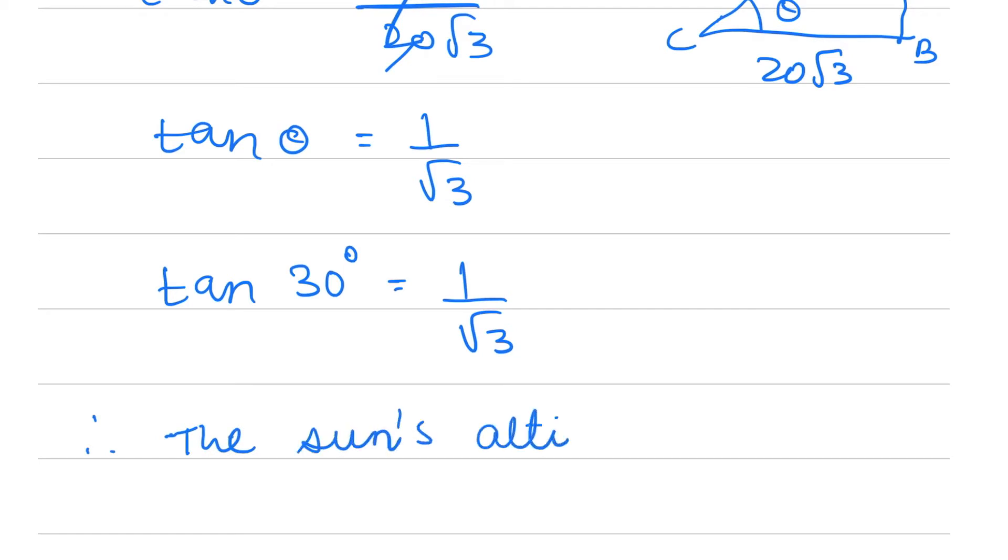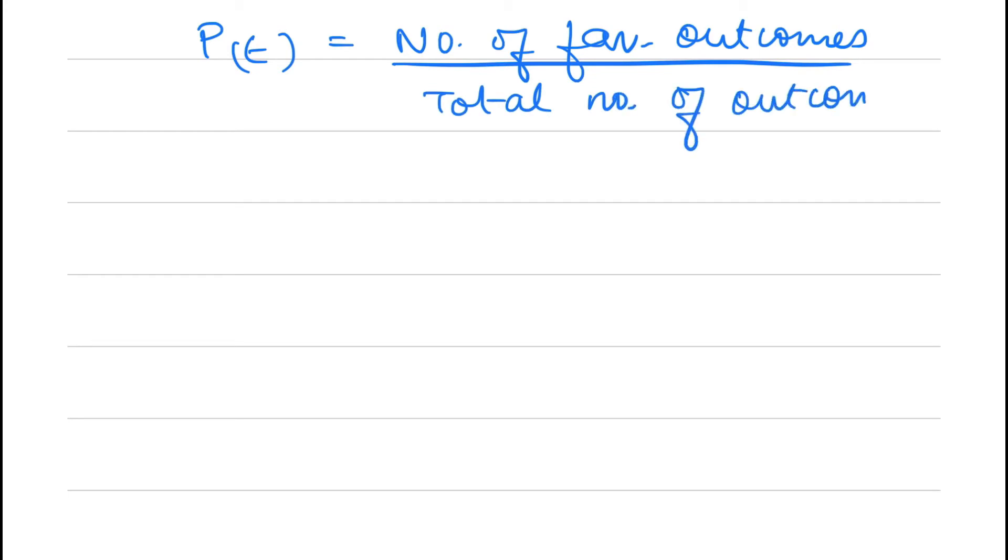Question 3: In this we are supposed to find the probability. Probability of an event equals number of favorable outcomes divided by total number of outcomes. Here, if two dice are rolled together, the product of two numbers should equal 6.